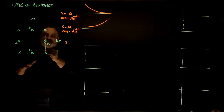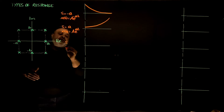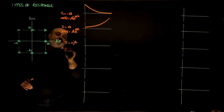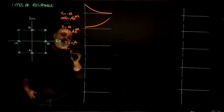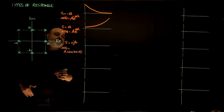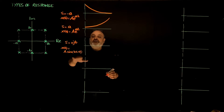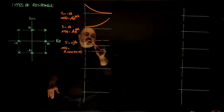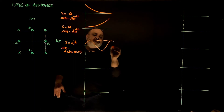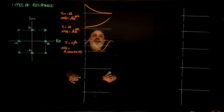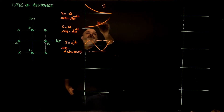If the roots are on the imaginary axis, they come in pairs: plus or minus j·b. Then x(t) is going to be some amplitude times sine of b·t plus some phase angle, because it could be sine or cosine. It's a constant amplitude sine or cosine — a sinusoidal response that continues forever. So this response is neither stable nor unstable; we call it marginally stable.